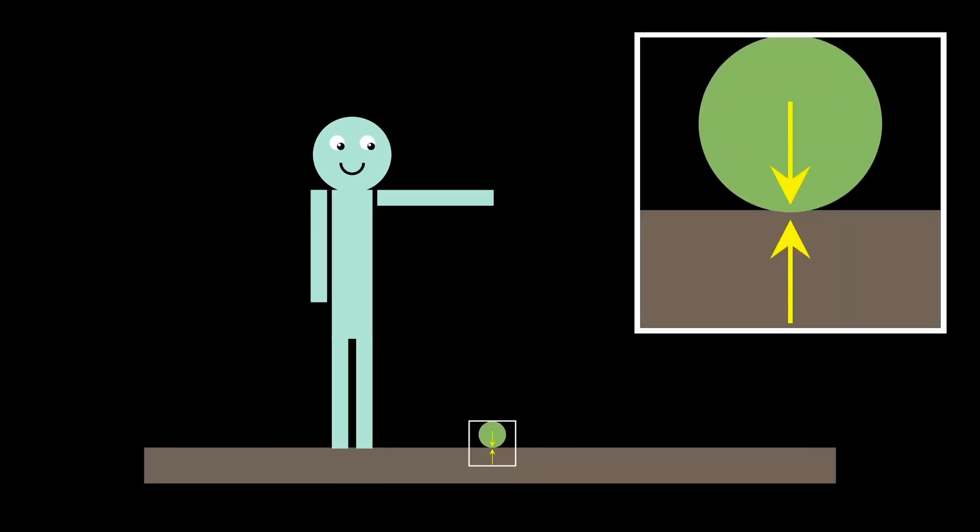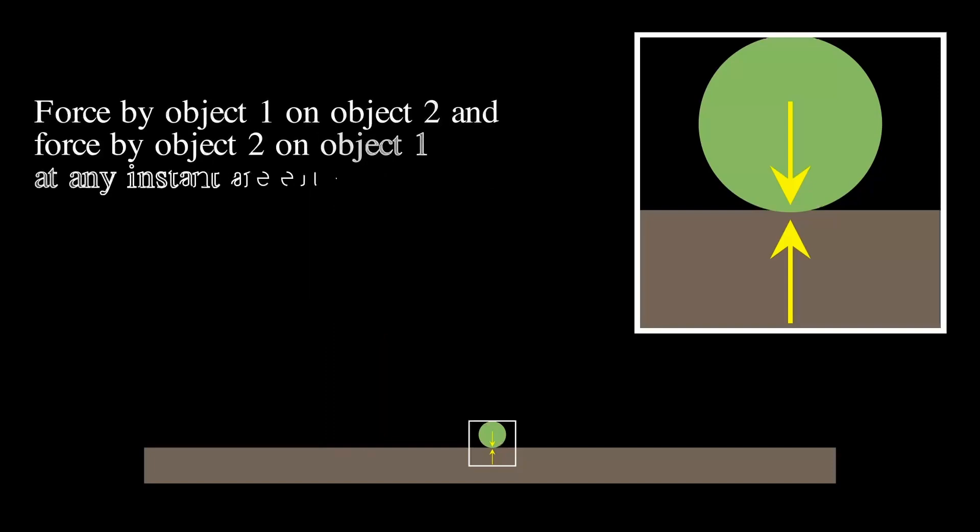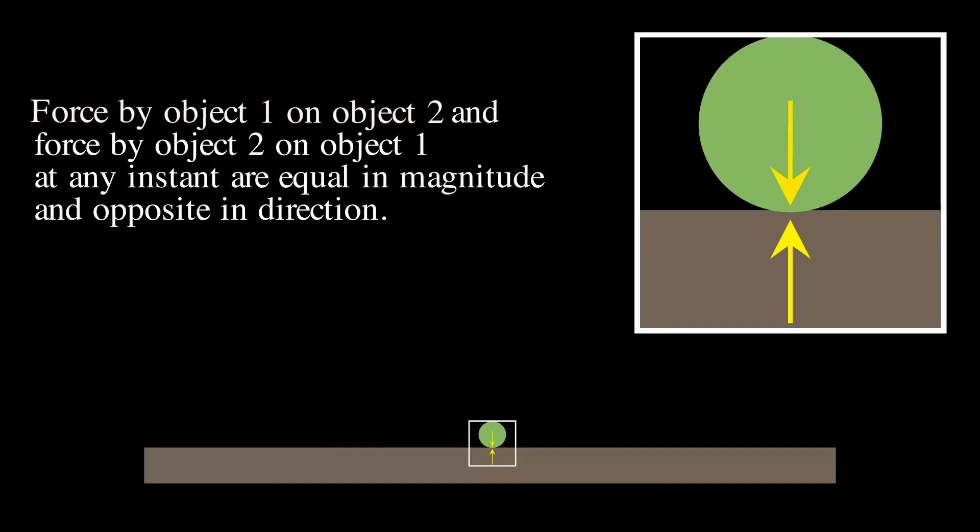Similarly, notice this phrase in the middle, equal and opposite. While this is not wrong, it's incomplete. So let's understand this law a bit better. Imagine that you are standing on a floor with a ball in your hand and you dropped the ball on the floor. Now let's analyze what happened between the ball and the floor. So Newton's third law actually says this, that the force by object one on object two and the force by object two on object one at any instant. So notice there is no action and reaction here.